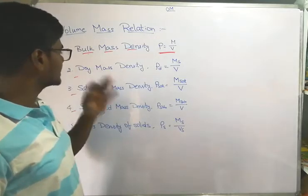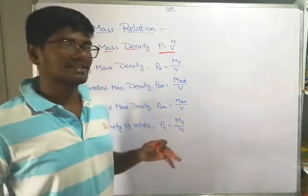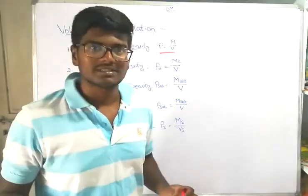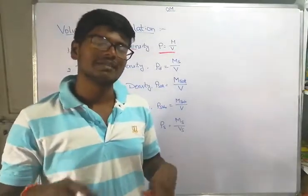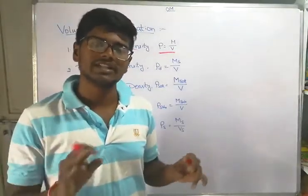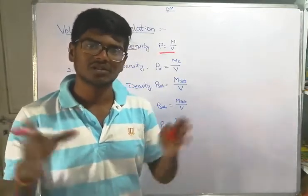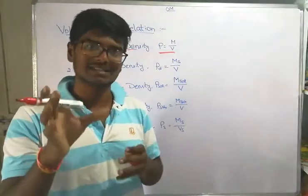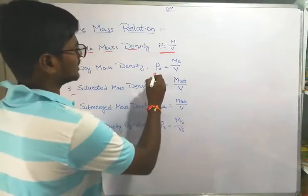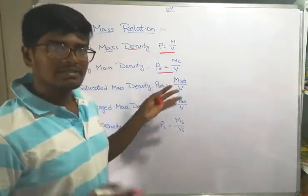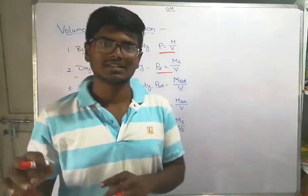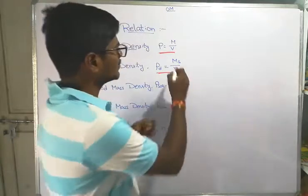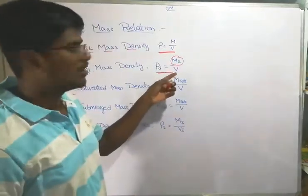Next is dry mass density. When we consider only the dry condition of the soil — meaning we remove the water content — the dry mass density is the mass of solids divided by the total volume of the soil.